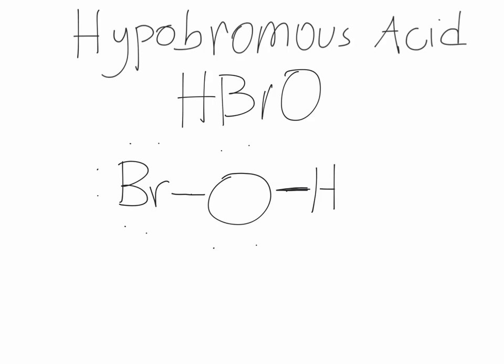Just to check your work, we can see that there are seven electron pairs here — one, two, three, four, five, six, seven — like what I showed earlier. So this is basically our final answer: Br with a single covalent bond to oxygen, and then a single covalent bond to hydrogen. I hope this was helpful.